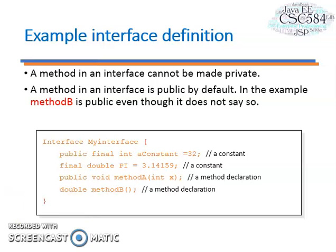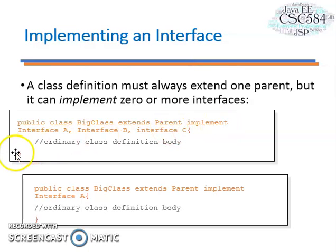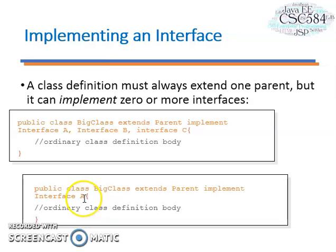The body implementation will be defined in the implementing class. A class definition must always extend one parent but can implement zero or more interfaces. So we can have more than one interface in a particular class: public class BigClass extends Parent implements InterfaceA, InterfaceB, InterfaceC. Whereas another class might implement only one interface, InterfaceA.